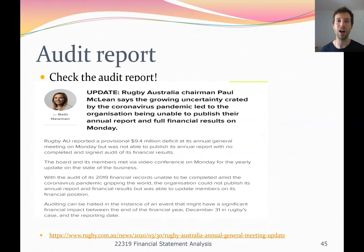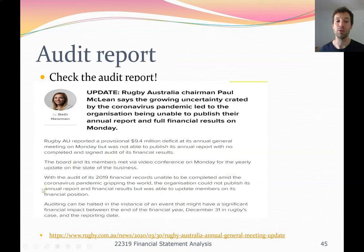For your assignment, always check the audit reports. Rugby Australia, for example, was unable to release their financial statements because auditors wouldn't sign off amid uncertainty about the organization's ability to continue as a going concern during the coronavirus pandemic. Their audit of the 2019 financial records could not be completed. Please check your firm's audit reports to see if auditors have had any problems with the firm's accounting.